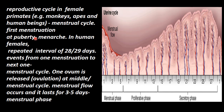First menstruation occurs at puberty, and that is called menarche. In human females, the cycle is repeated at an interval of 28 to 29 days. The events from one menstruation to the next menstruation are called the menstrual cycle.